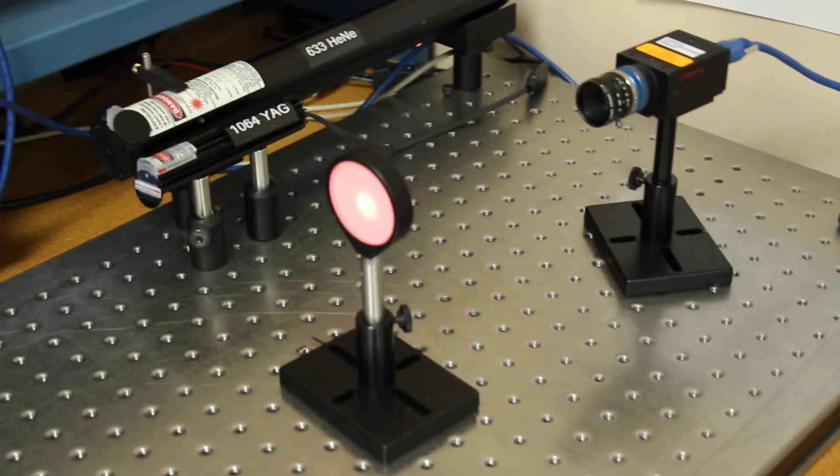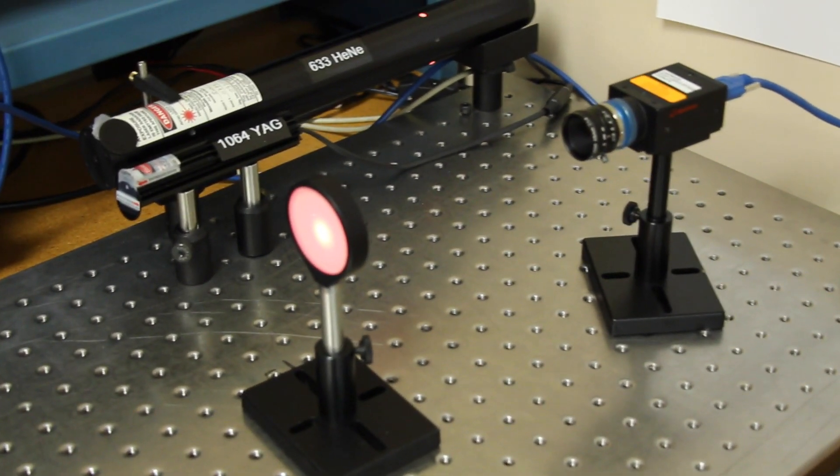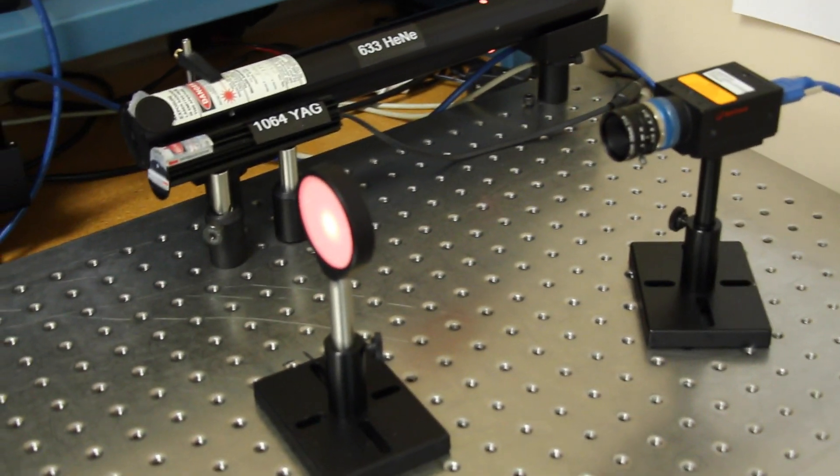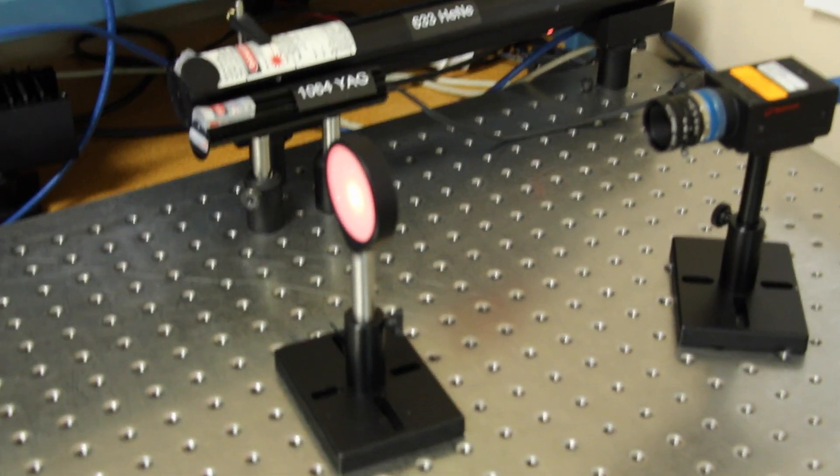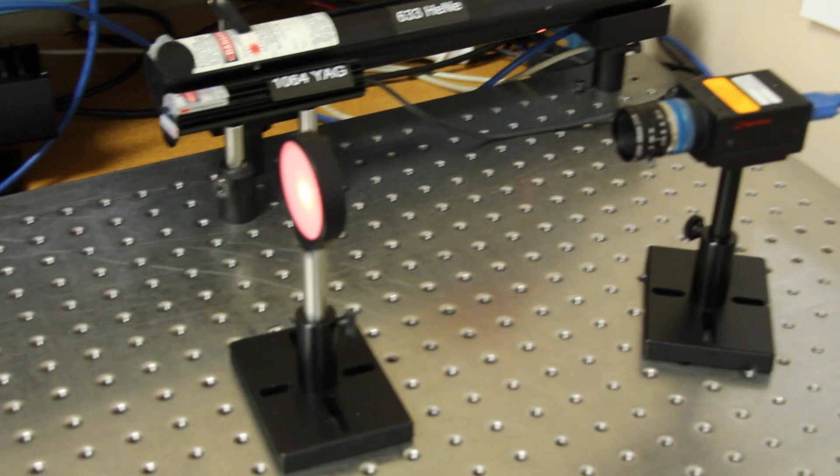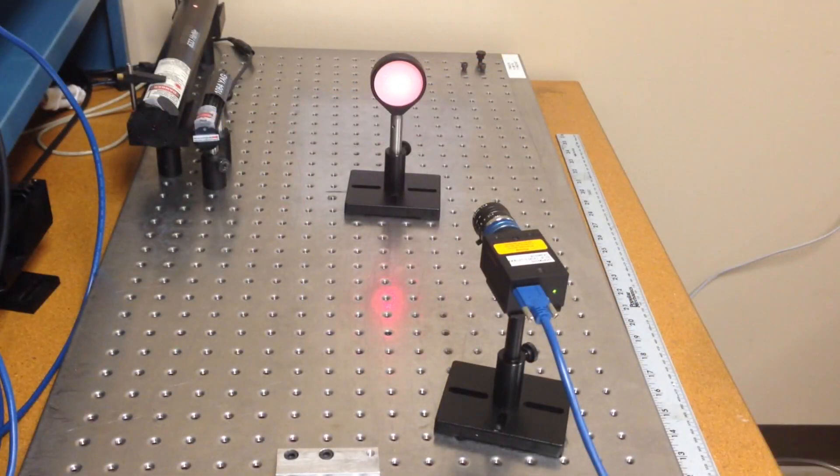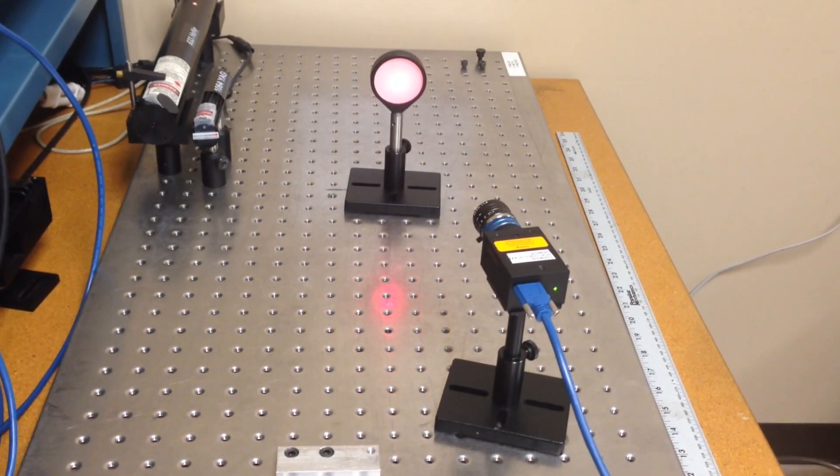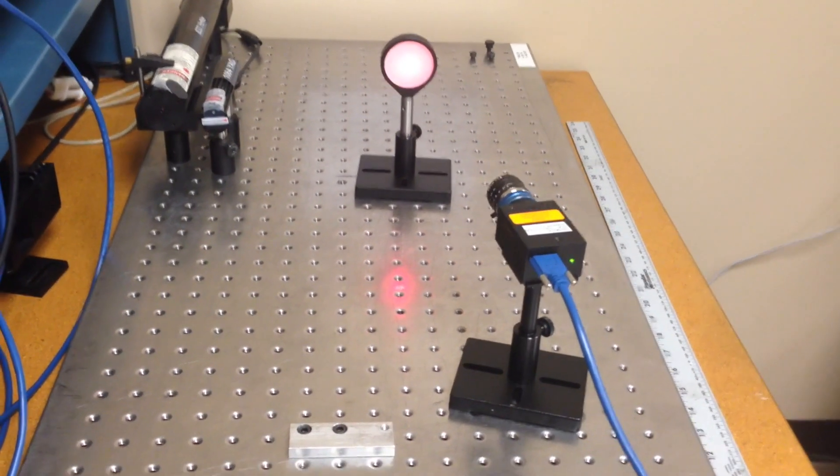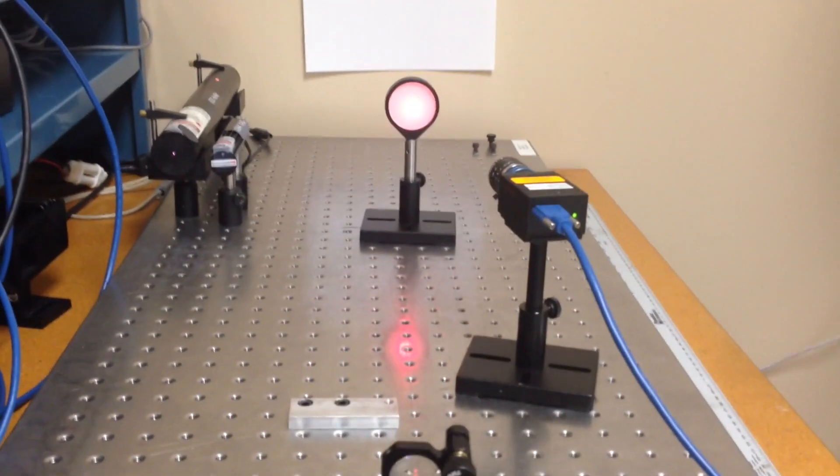In transmission mode, the camera imaging system should be placed slightly off-axis to the laser so that the transmitted laser beam does not impinge directly on the camera lens. In reflection mode, the laser and imaging system should be placed at small equal angles at either side of the central axis perpendicular to the target.